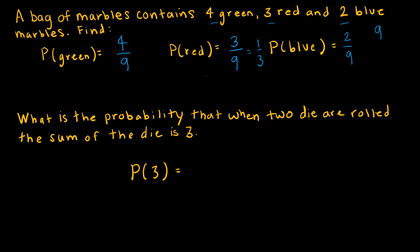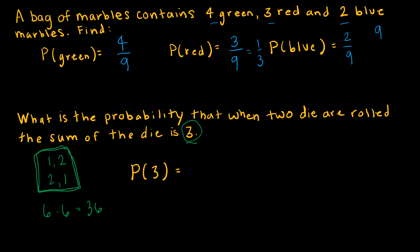A somewhat harder question has to do with the probability when I roll 2 dice. What's the probability that when you roll 2 dice, the sum is 3? To roll a sum of 3, I need a 1 and a 2, but I can also get a 2 and a 1 — so there are 2 outcomes. The total possibilities are 6 times 6, which is 36 different ways to roll 2 dice, keeping in mind that a 1 on the first die and 2 on the second die is distinct from a 2 on the first die and 1 on the second. So the answer is 2 out of 36, or 1 out of 18.